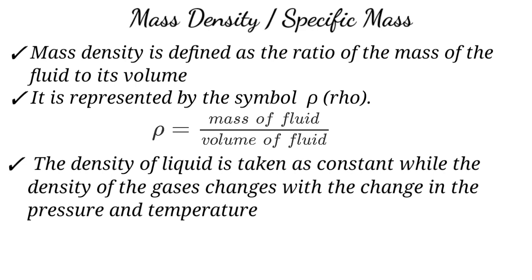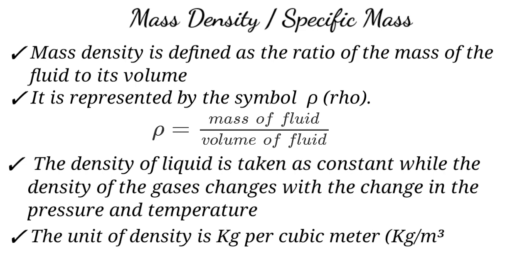The mass density of a liquid depends on pressure and temperature, but the mass density of a liquid is considered approximately constant because liquid is incompressible — meaning the volume does not change significantly with pressure and temperature. The unit of mass density is kg per meter cube.